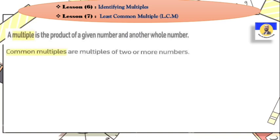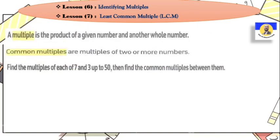What is the meaning of a multiple? A multiple is not a new concept — we used it from Primary Four. A multiple is the product of a given number and another whole number. When you multiply two numbers, the answer is called the multiple.